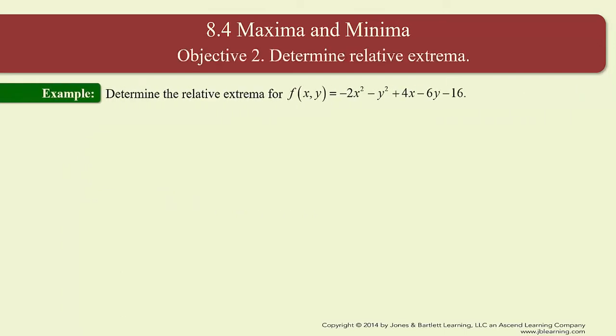The steps are: determine all critical points (a,b); get the second partial with respect to x, second partial with respect to y, and mixed partial; evaluate the second-order partial derivatives at each critical point to determine D; then apply the conclusions of the second derivative test. For this function — the same one from our first example — let's determine the relative extrema.